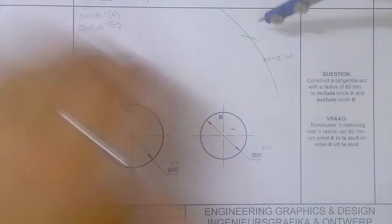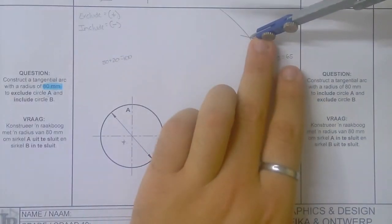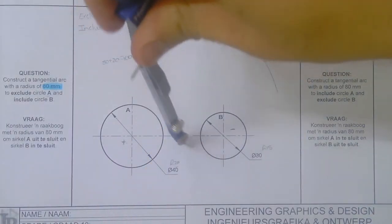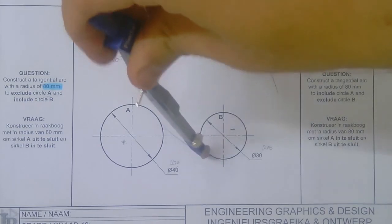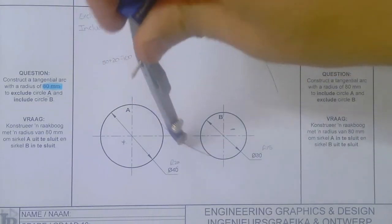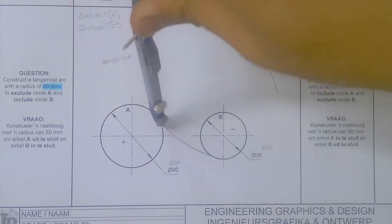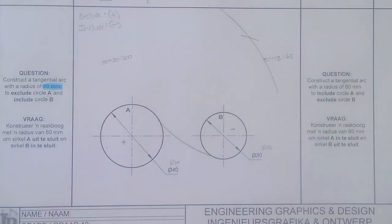And then put it on that point, drawing your line. And that is an include and exclude circle.